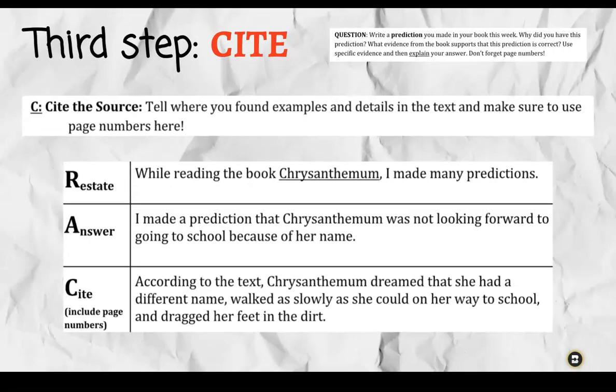Now I'm going to find evidence to support that, so I'm going to pick out some examples for the Cite step. 'According to the text' — which is one of those sentence starters we talked about — 'Chrysanthemum dreamed that she had a different name, walked as slowly as she could on her way to school, and dragged her feet in the dirt.' This is a picture book so I don't have page numbers, but if I was reading a novel, this is where I would include page numbers under Cite.